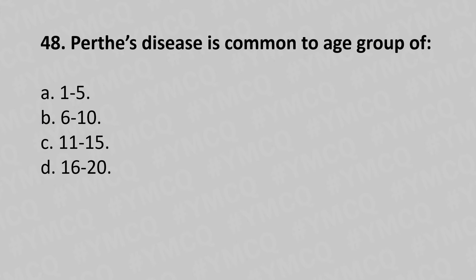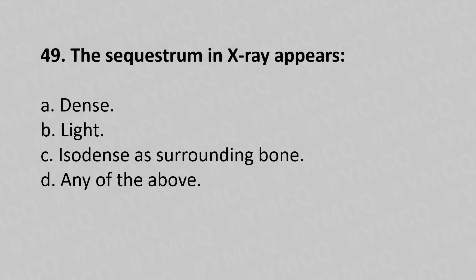Moving to our 48th question: Perthes disease is common at the age group of option A 1 to 5, option B 6 to 10, option C 11 to 15, option D 16 to 20. The answer is option B 6 to 10.